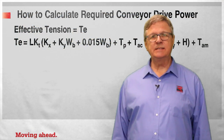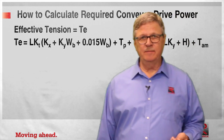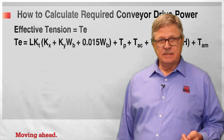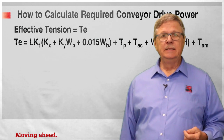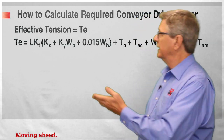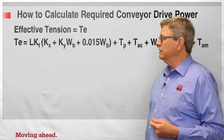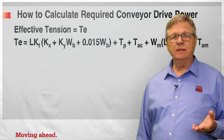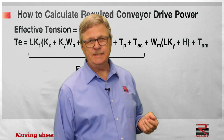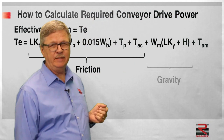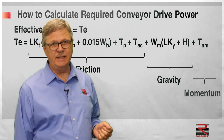The CEMA conveyor design manual provides this equation to calculate effective belt tension. This is the historical method of calculating TE. It consists of a variety of parameters that enable the designer to figure out how much tension the belt needs to overcome friction, how much tension is required to overcome gravity, and how much tension is required to overcome momentum.